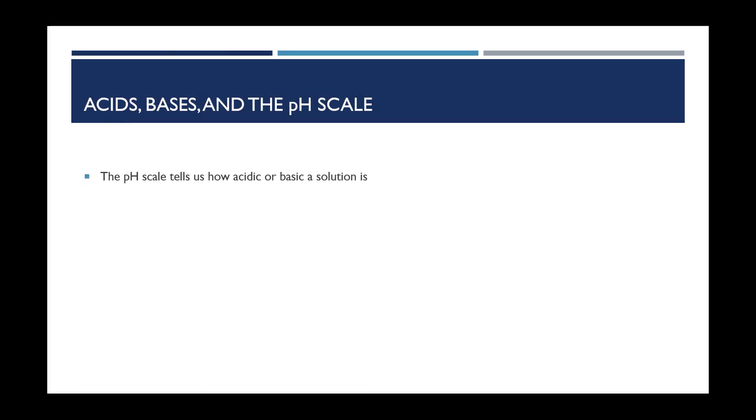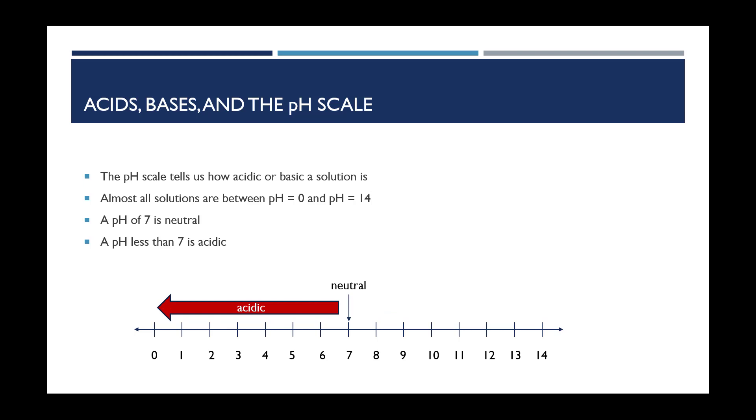The pH scale allows us to determine how acidic or basic a solution is, and express the answer in a simple way. The scale runs from 0 to 14, although values outside of this range are possible. A pH value of 7 is considered neutral. A pH less than 7 is considered acidic. A pH greater than 7 is basic.